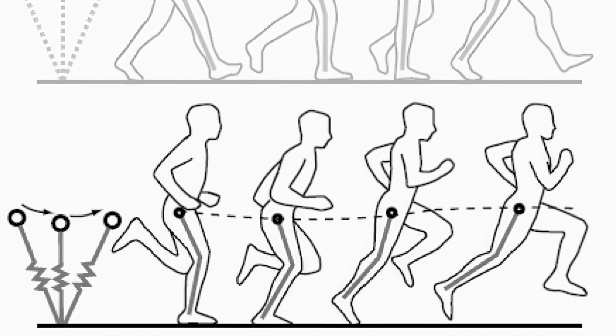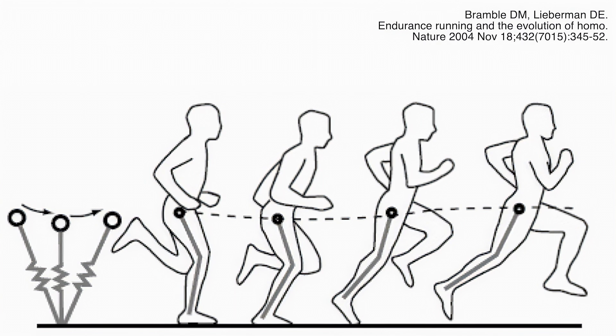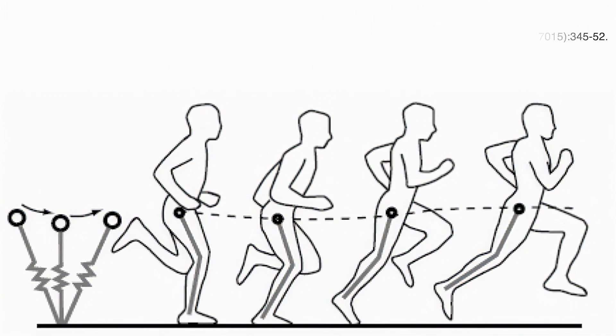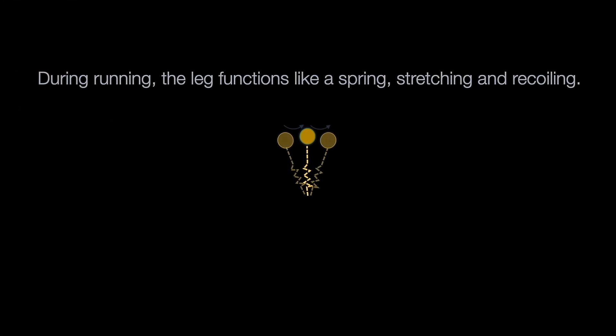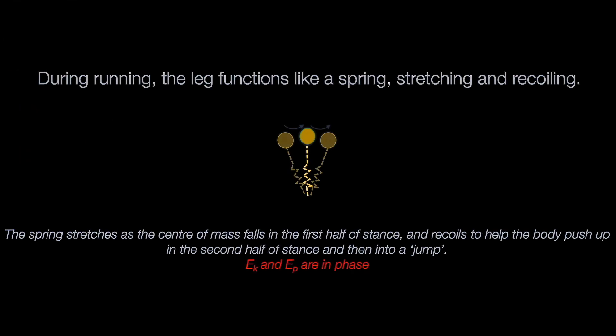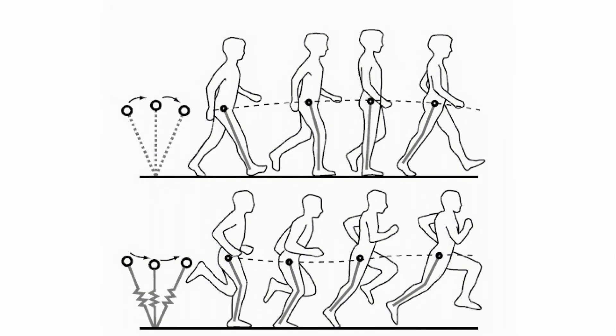At these higher speeds, running becomes less costly than walking because it exploits a mass-spring mechanism that exchanges kinetic and potential energy very differently. This spring stretches as the centre of mass falls in the first half of stance and recoils to help the body push up in the second half of stance and then into a jump. Unlike in walking, the body's kinetic energy and its potential energy are in phase rather than out of phase. This reversal again allows us to save energy for what is essentially a different movement task — locomotion at faster speeds.